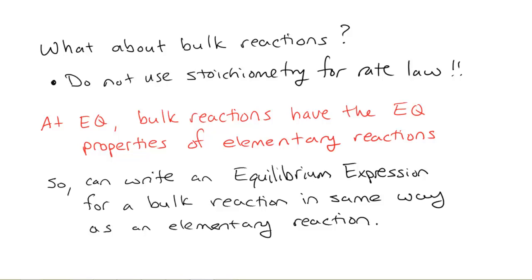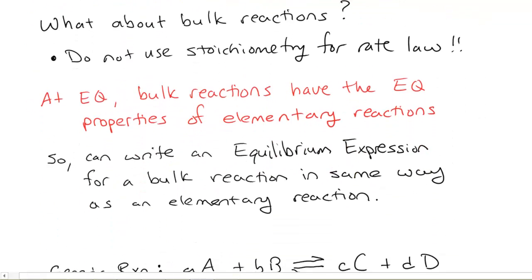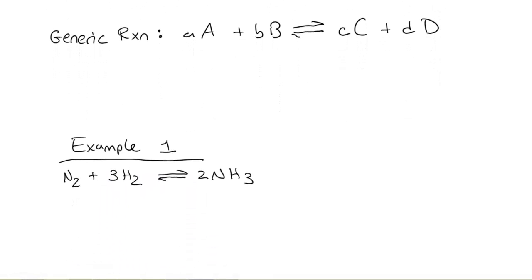We can write an equilibrium expression for any reaction using the same thing. So, let's back up again. What did we do? Our equilibrium expression, right here, our equilibrium constant was equal to the product of our product concentrations raised to their power, divided by the product of the reactant concentrations raised to their stoichiometric power. That's how we're going to do every one of these from now on. We're always going to write it as products over reactants.